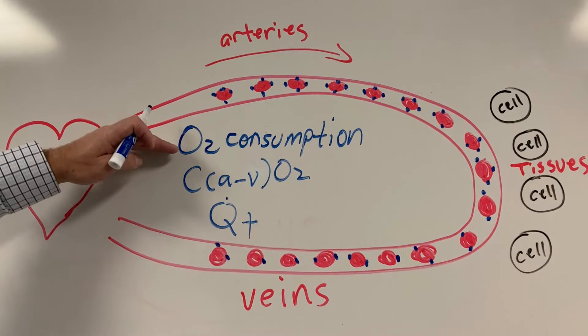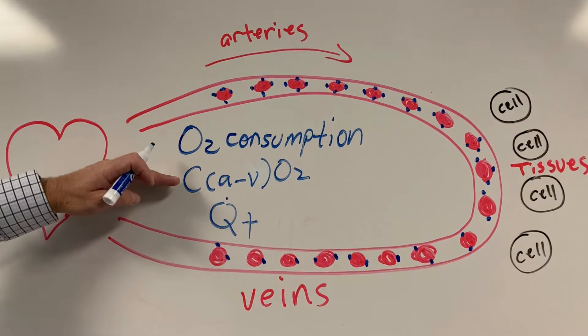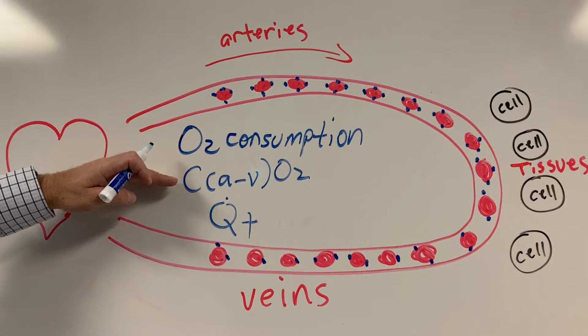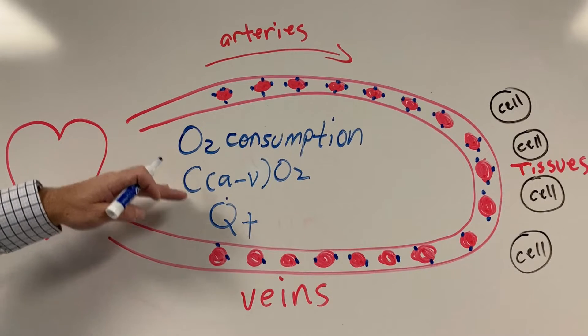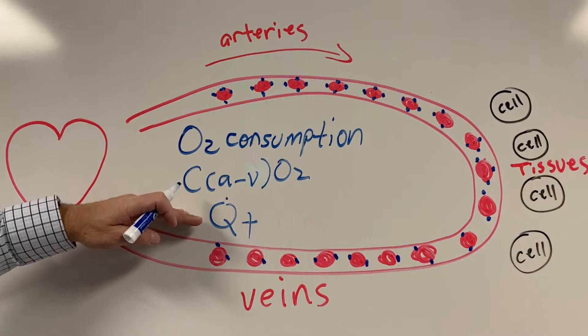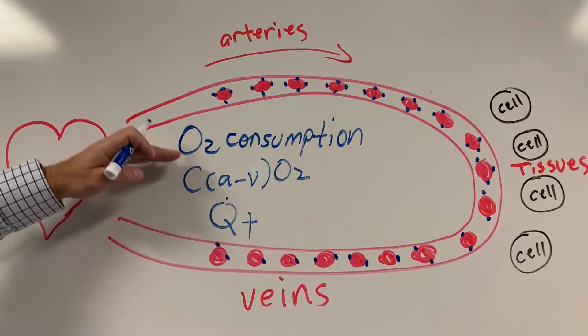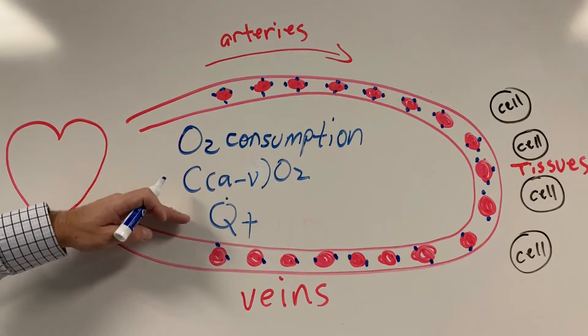We're going to talk about O2 consumption, CaO2 minus CVO2, oxygen content difference or AV difference, and cardiac output and the relationship between the three.